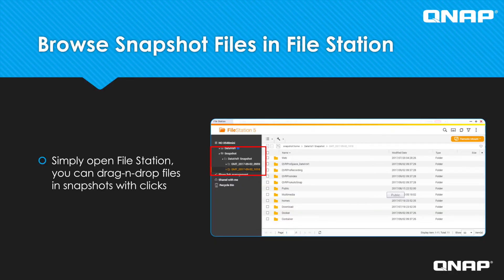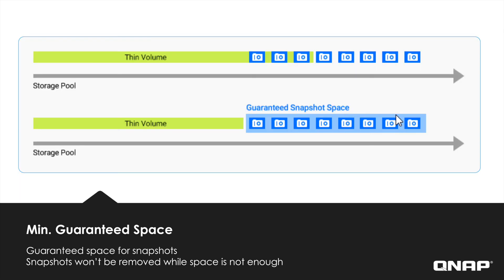In addition to being able to manage your snapshots in the storage and snapshot section, you can also easily manage snapshots in File Station just by dragging and dropping. In the display, you can see various snapshots in the snapshot folder. You can enable or disable the snapshot folder in the global settings. In the past, when you began to run out of room on your NAS, some of your oldest snapshots could be deleted. Now you will be able to set aside space for your snapshots so you don't wind up having your snapshots unexpectedly erased.